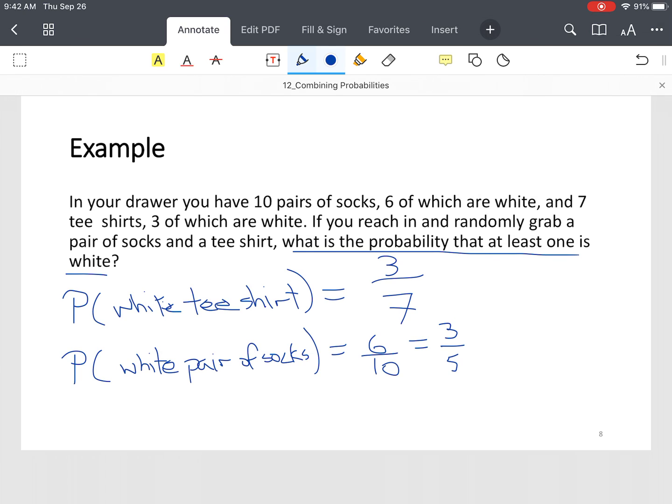And then we have what's called the probability of an overlap, which simply means both are white. So to find that overlap, we simply go three-sevenths because this can happen at the same time because we're drawing a t-shirt and a pair of socks at the same time. So we need to multiply three-sevenths times three-fifths, which is 9 thirty-fifths.